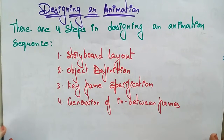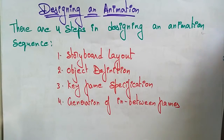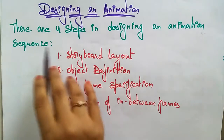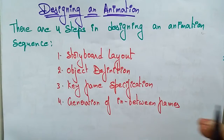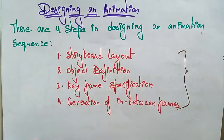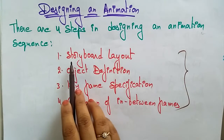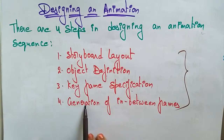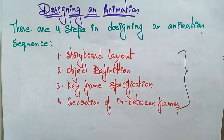Welcome back. Let's continue with animations in computer graphics. There are four steps in designing an animation sequence if you want to make any movement in a picture or object. Those steps are: storyboard layout, object definition, keyframe specification, and generation of in-between frames. If you read these words carefully, you will get a clear idea.